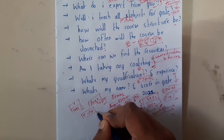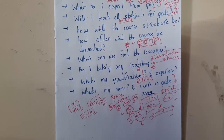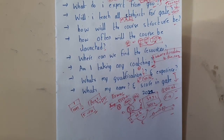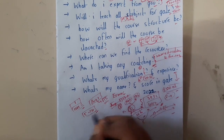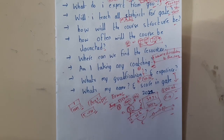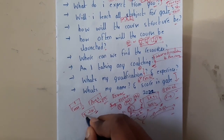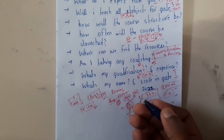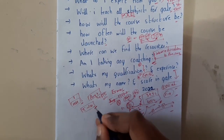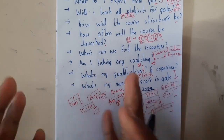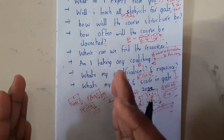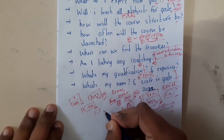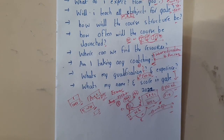I want to target both GATE aspirants and normal students, and both groups benefit from shorter lectures. If you want longer combined videos — for example, if the array concept is covered across 5 to 10 videos, I can merge them into a single video. Let me know if you'd like that.